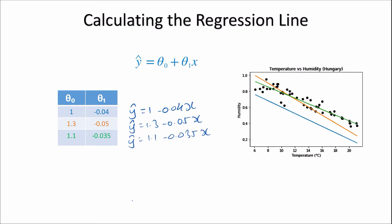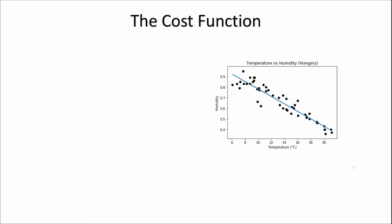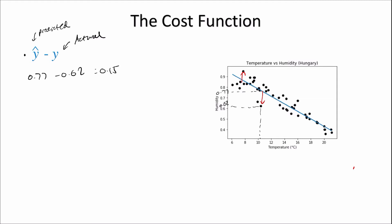Now, which of these lines seems to capture the relationship between temperature and humidity the best? We could say perhaps it's the green line, and the reason why has to do with something called the cost function. Notice that on the majority of points there is an error between the data point recorded and the regression line. For example, at a temperature of 10.4 degrees we observed a humidity of 0.62, but our regression line predicted 0.77 — so the error is y-hat minus y, which is 0.77 minus 0.62, equaling 0.15.